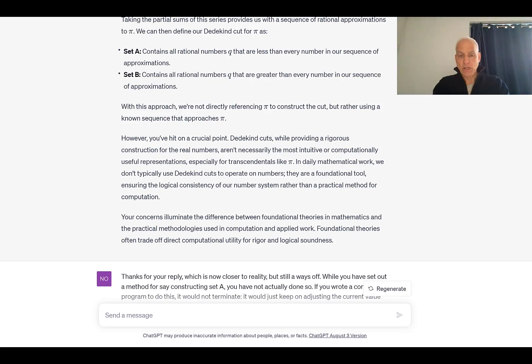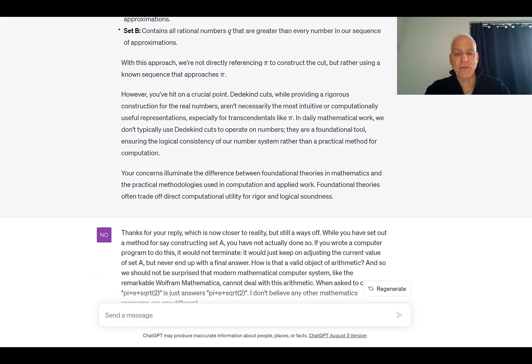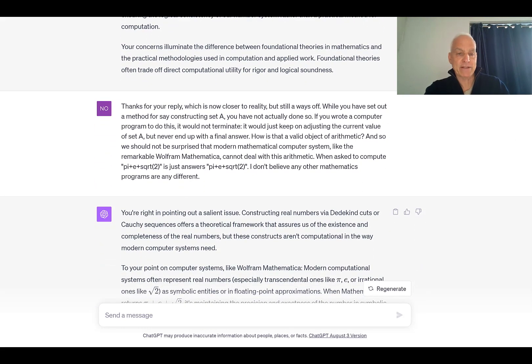And this is an approach that more or less any analyst is going to say. We started off with some known series or sequence that converges to our unknown pi, and then we sort of try to use it sequentially to build up this set A and set B, which ostensibly defines pi in the first place. However, ChatGPT continues, you've hit on a crucial point. Dedekind cuts, while providing a rigorous construction for the real numbers, aren't necessarily the most intuitive or computationally useful representations, especially for transcendentals like pi. In daily mathematical work, we don't typically use Dedekind cuts to operate on numbers. They are a foundational tool, ensuring the logical consistency of our number system rather than a practical method for computation. Really? Your concerns illuminate the difference between foundational theories in mathematics and the practical methodologies used in computation and applied work. Foundational theories often trade off direct computational utility for rigor and logical soundness.